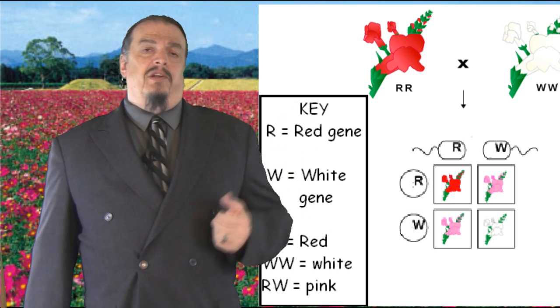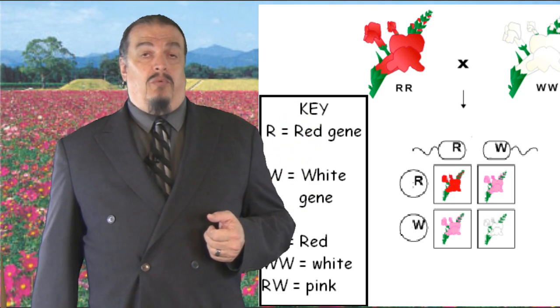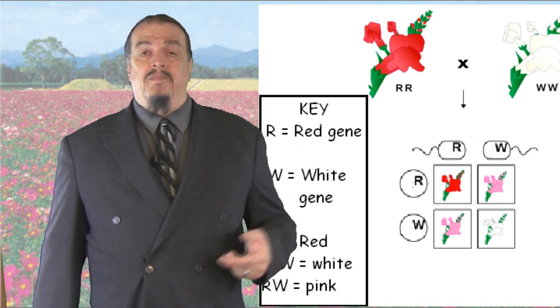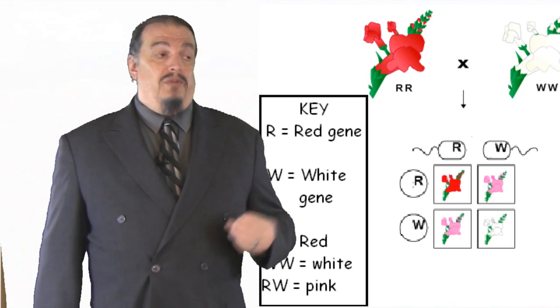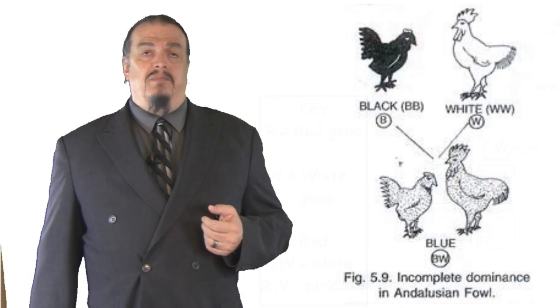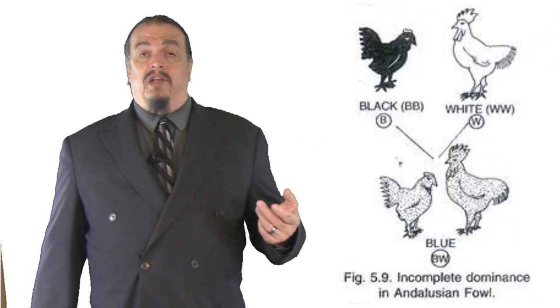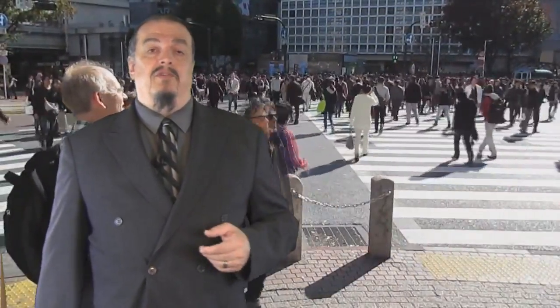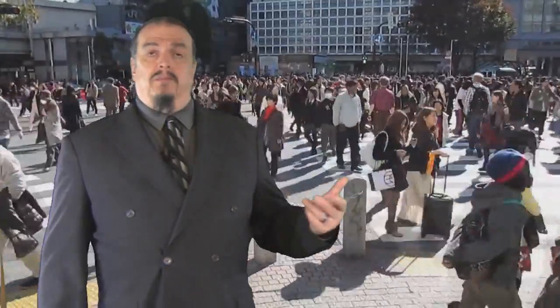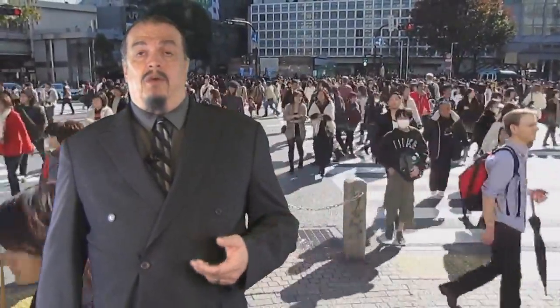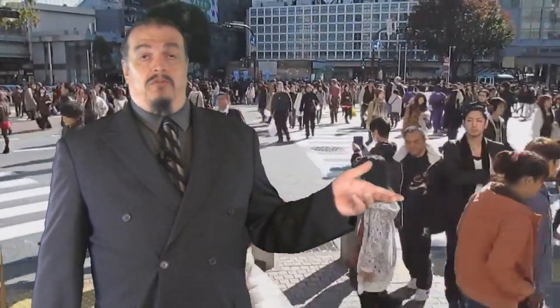If you look at this Punnett square, the red R allele, when paired with the W or white allele, doesn't completely dominate and produces pink instead. This heredity pattern is called incomplete dominance because a dominant allele doesn't dominate a trait completely — it is only partially dominant. One of the most famous examples is the Andalusian fowl, a chicken with a white allele and a black allele that can produce blue offspring. Incomplete dominance also causes many human traits: voice pitch and upper lip size are often a combination, and combining alleles for curly and straight hair produces wavy hair.